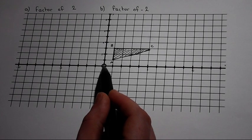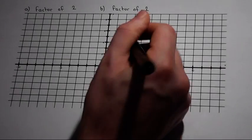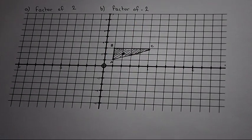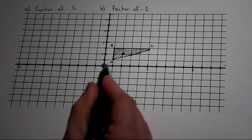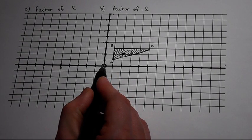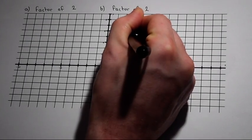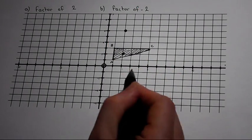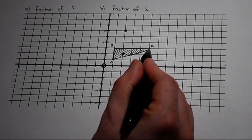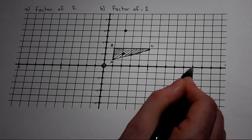Rather than across one, up one, we go across two, up two from the center of enlargement. For B, rather than across one, up three, go back to the center of enlargement, across two, up six. And for C, rather than across five, up three, back to the center of enlargement, across ten, up six.